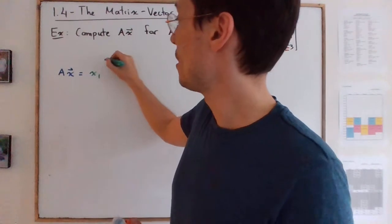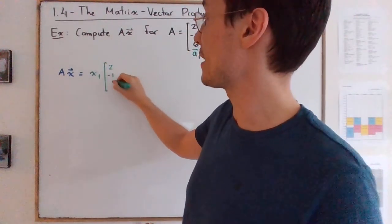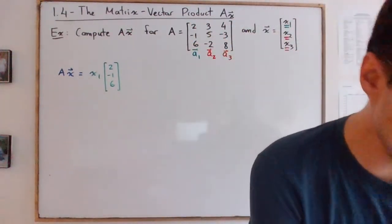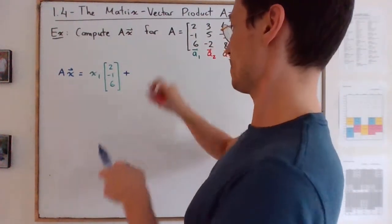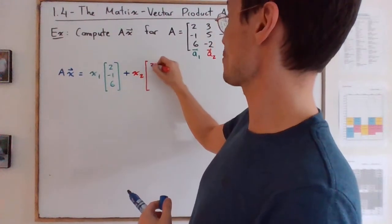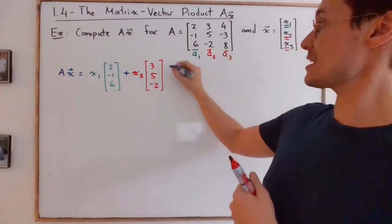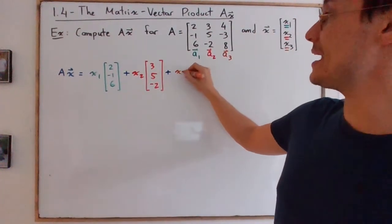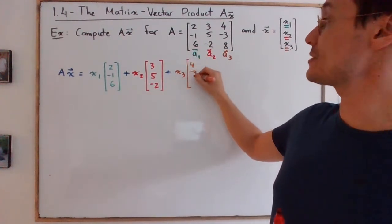So in other words, you have x1 multiplied by the first column, which is [2, -1, 6], plus x2 times A2, so plus x2 multiplied by [3, 5, -2], and finally plus x3 multiplied by A3, in other words [4, -3, 8].